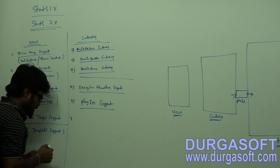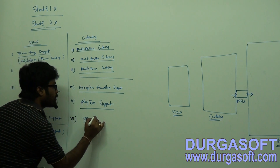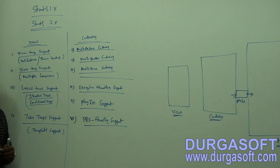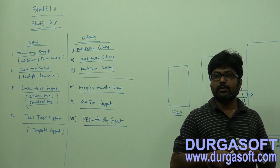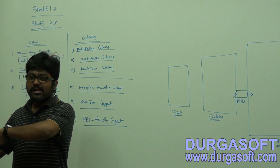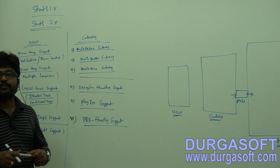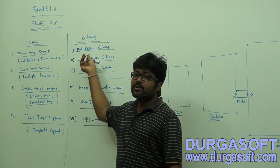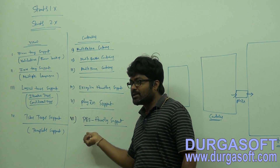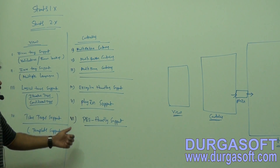Pre-handling support is also given. If you want to execute anything before your controller classes — like security operations — you can write them in a pre-handler class and that code will execute before your controllers. So instead of writing security code a thousand times for a thousand forms, write it once in the pre-handler class. You can use this for security and for pre-logging.